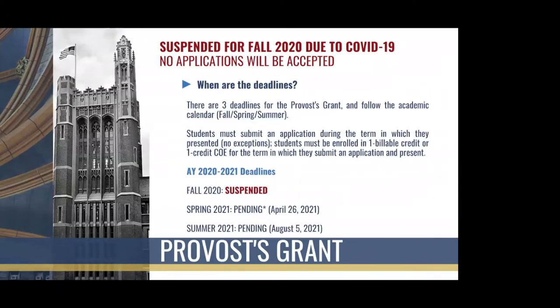There are three deadlines to be mindful of, following the academic calendar — fall, spring, and summer terms. You must submit your application during the term in which you are presenting; there is no exception to this. So if you're presenting your academic research in October, you would need to apply within the fall term, and you must be enrolled in that one billable credit or have a one-credit COE on your record for the money to be disbursed to you.